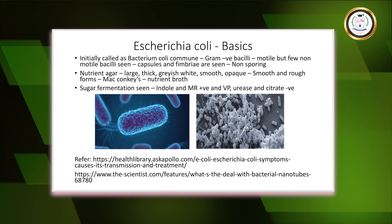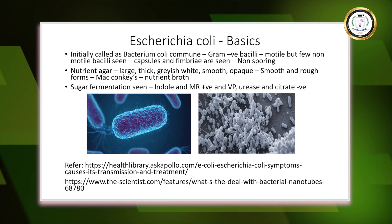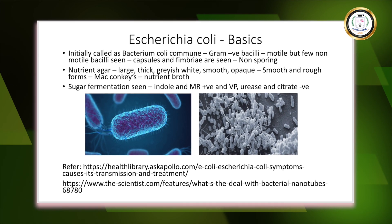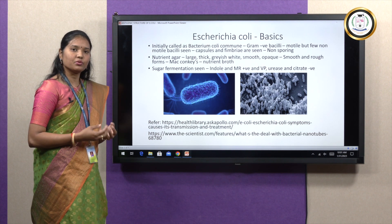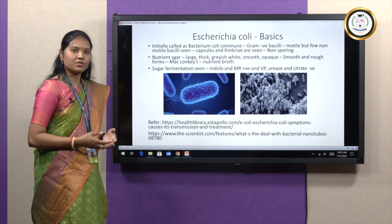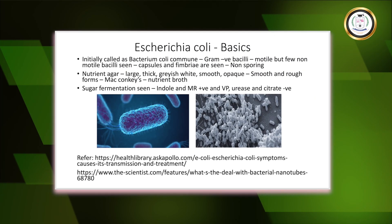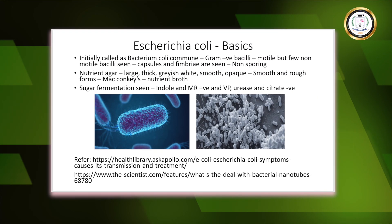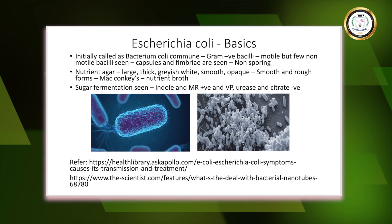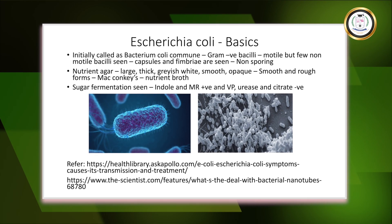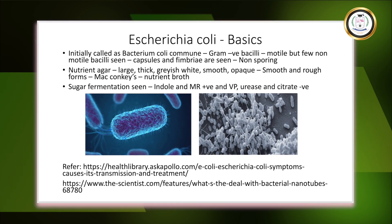Apart from nutrient agar, other media that we could use to grow E. coli is blood agar as well as MacConkey agar. On MacConkey agar, E. coli is able to form pink color colonies due to lactose fermentation. Coming to the biochemical characteristics of E. coli, Escherichia coli is able to ferment a number of sugars — glucose, galactose, maltose, sucrose, mannitol, and so on. They are indole and MR positive, while VP, urease, and citrate negative. You can see an electron microscopic image of E. coli.